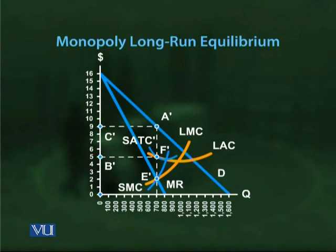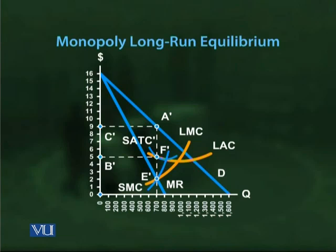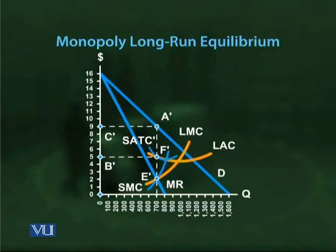The reason long-run profit is higher is that in the long run the firm is able to build the optimum scale of plant, shown in the diagram as SATC (short-run average total cost), which is tangent to the long-run average cost curve at point F'. The short-run marginal cost curve also cuts the long-run marginal cost at point E'. Under monopoly, the firm earns economic profit in the long run, whereas in the competitive market case, economic profit was equal to zero in the long run.